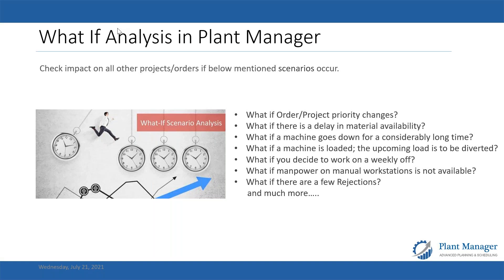Upcoming load has to be diverted, you sometimes work on weekly offs, there are emergencies, a CNC machine operator doesn't turn up. Engineering problems cause rejections. All these things impact delivery time. When we commit a delivery time we assume certain things, and when they go out of hand the delivery time takes a beating. When the customer follows up, you have no answers because you've lost track.